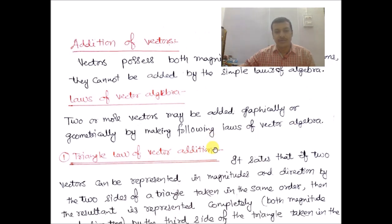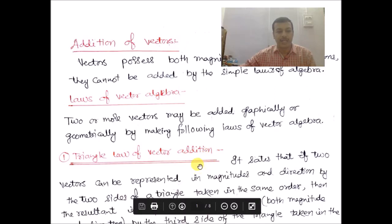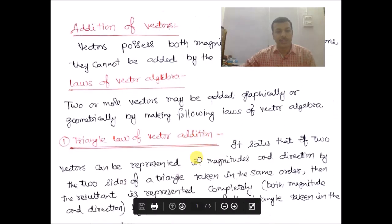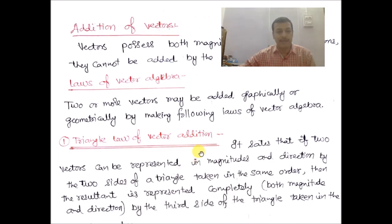Number one is the triangle law of vector addition. The second law is the parallelogram law of vector addition. The third law is the polygon law of vector addition.